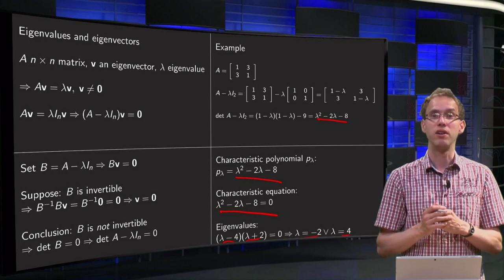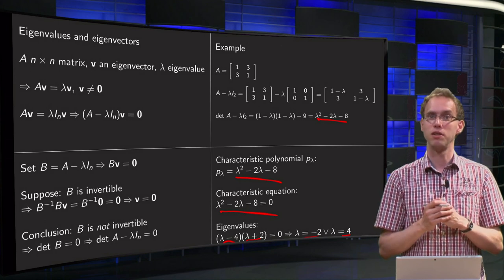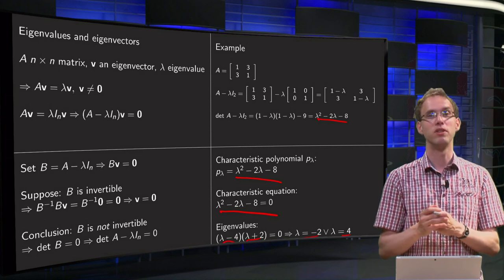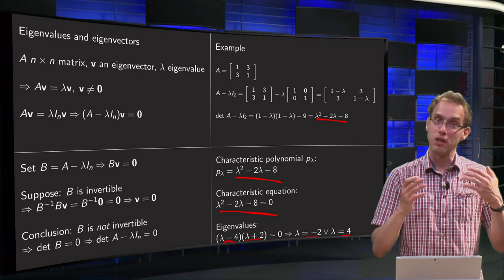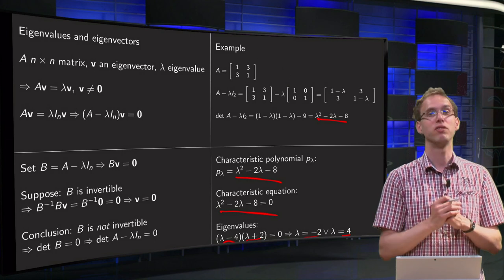Now you see how you can find the eigenvalues of a matrix. Compute A minus lambda times identity matrix, compute the determinant of that matrix, compute the zeros of the corresponding polynomial, and there you have your eigenvalues.